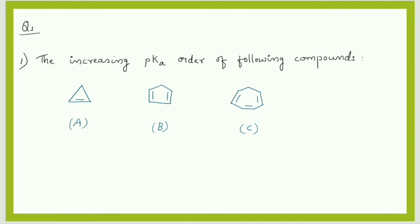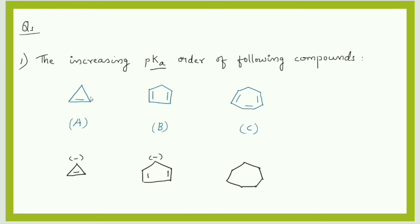I have selected five questions from previous year CSIR NET. First question: the increasing pKa order of the following compounds. We have to find which is more acidic. Compound A is cyclopropene, compound B is cyclopentadiene, and compound C is the cycloheptatrienyl anion. We have to find the aromaticity and anti-aromaticity first.